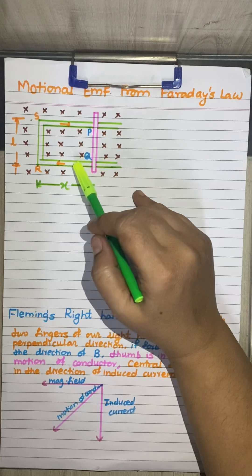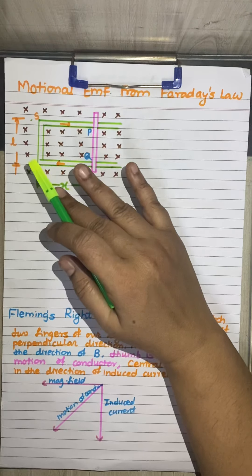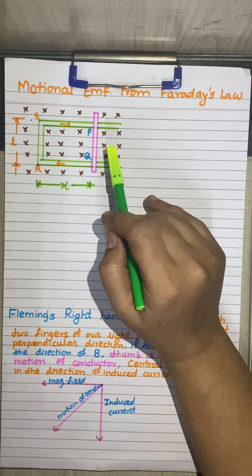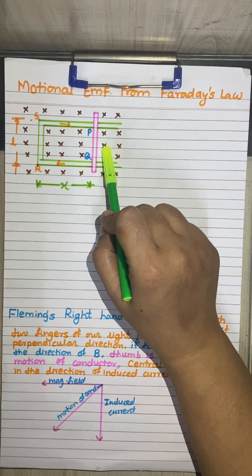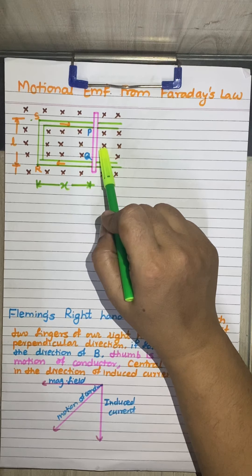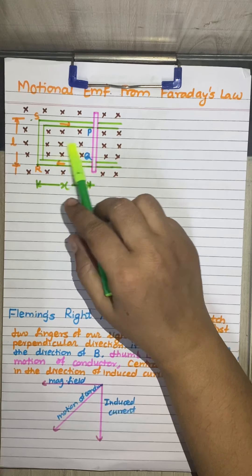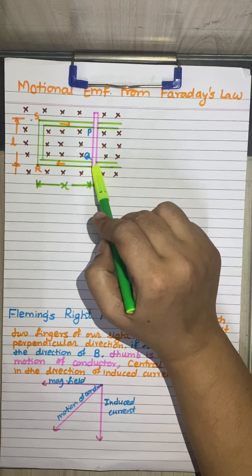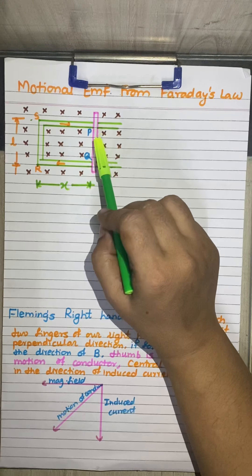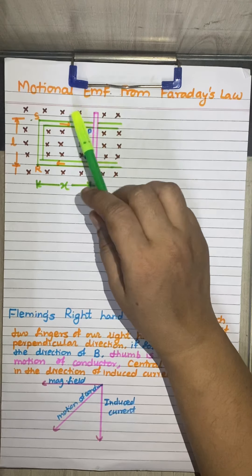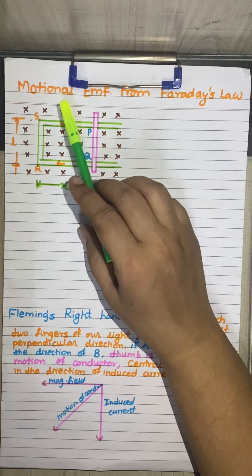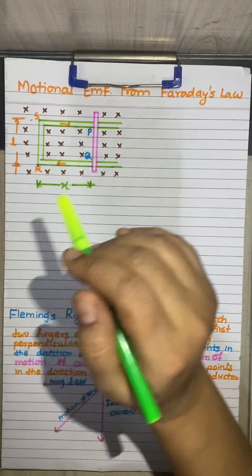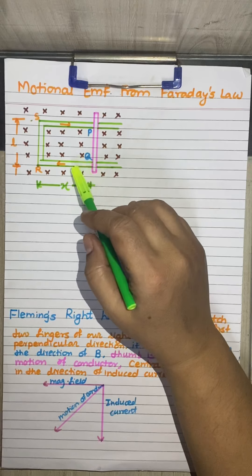What is Motional EMF? We have studied induced EMF where the coil was stationary and the magnet was moving. Here, the magnetic field is constant and we are moving the conductor through that magnetic field. The induced EMF inside the rod or conductor is called Motional EMF because it is produced due to the motion of the conductor in the magnetic field.